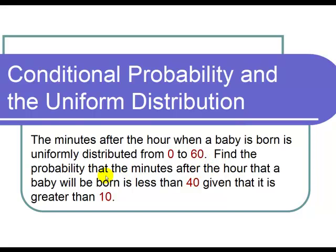Find the probability that the minutes after the hour that a baby will be born is less than 40 given that it is greater than 10.